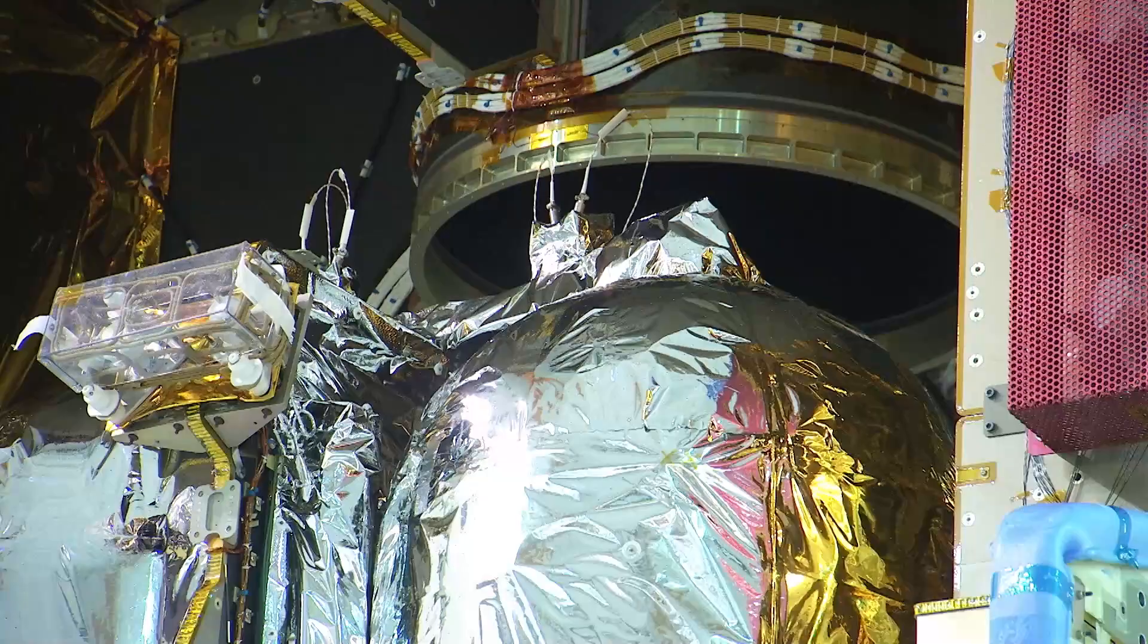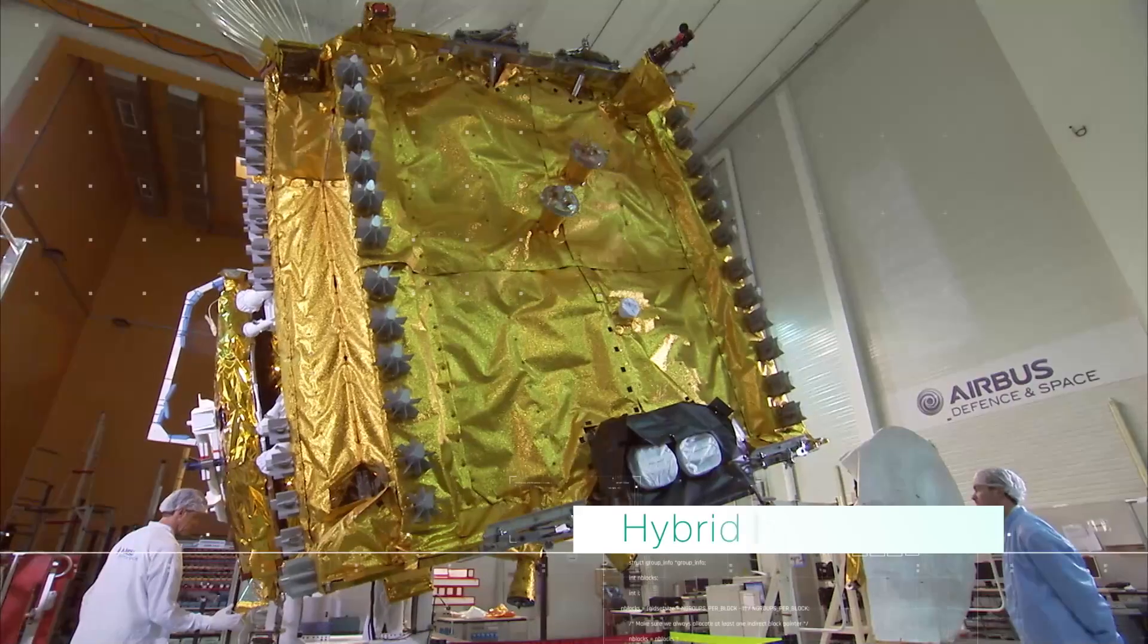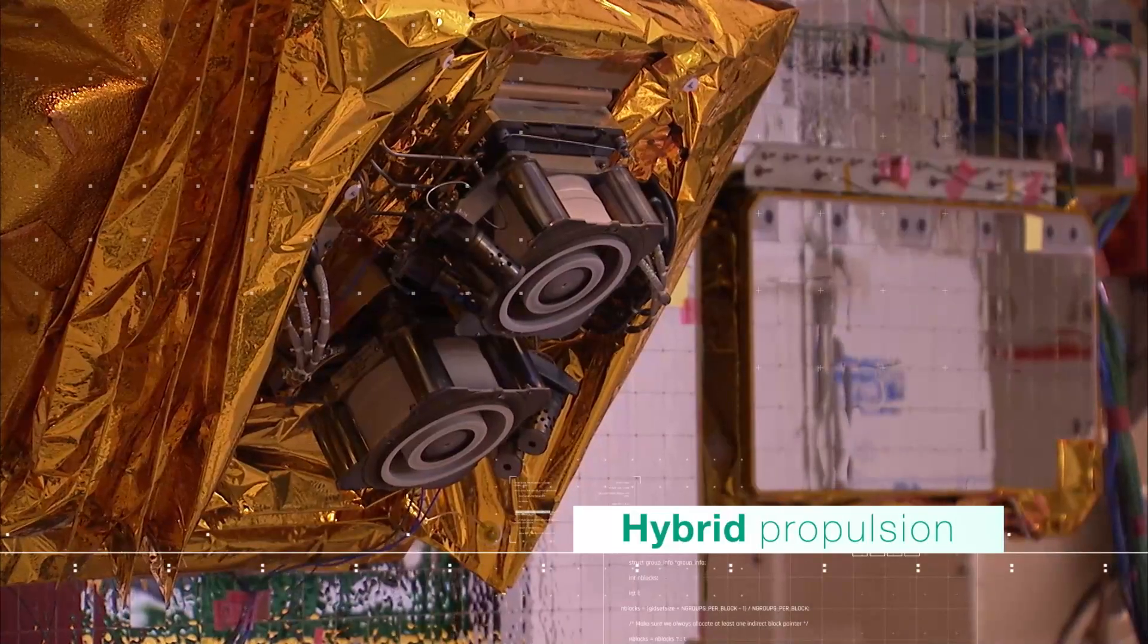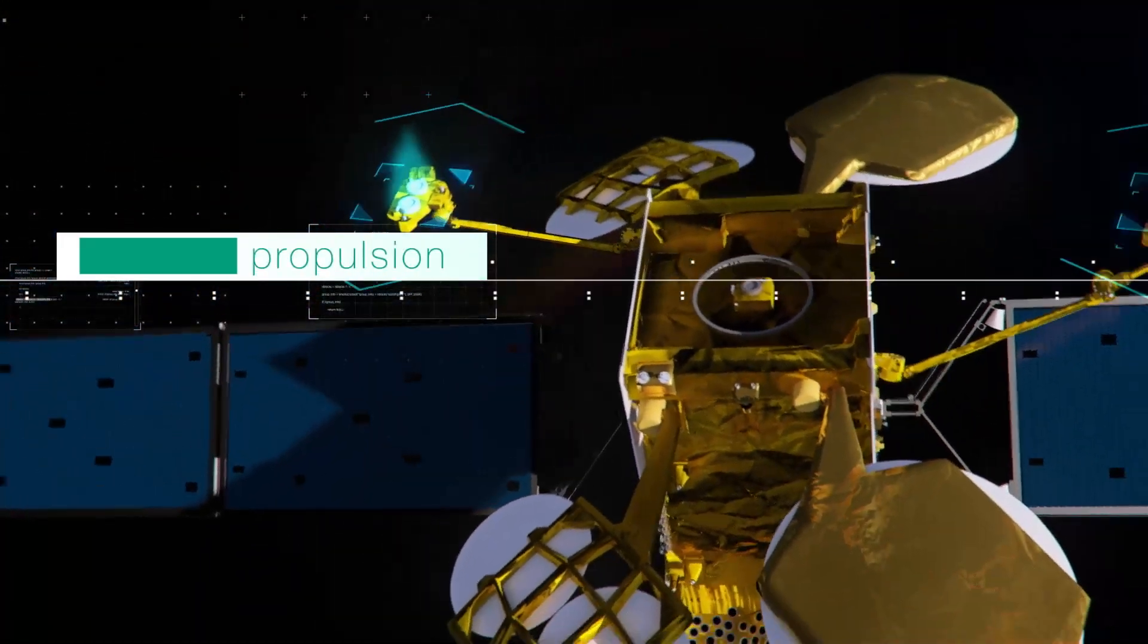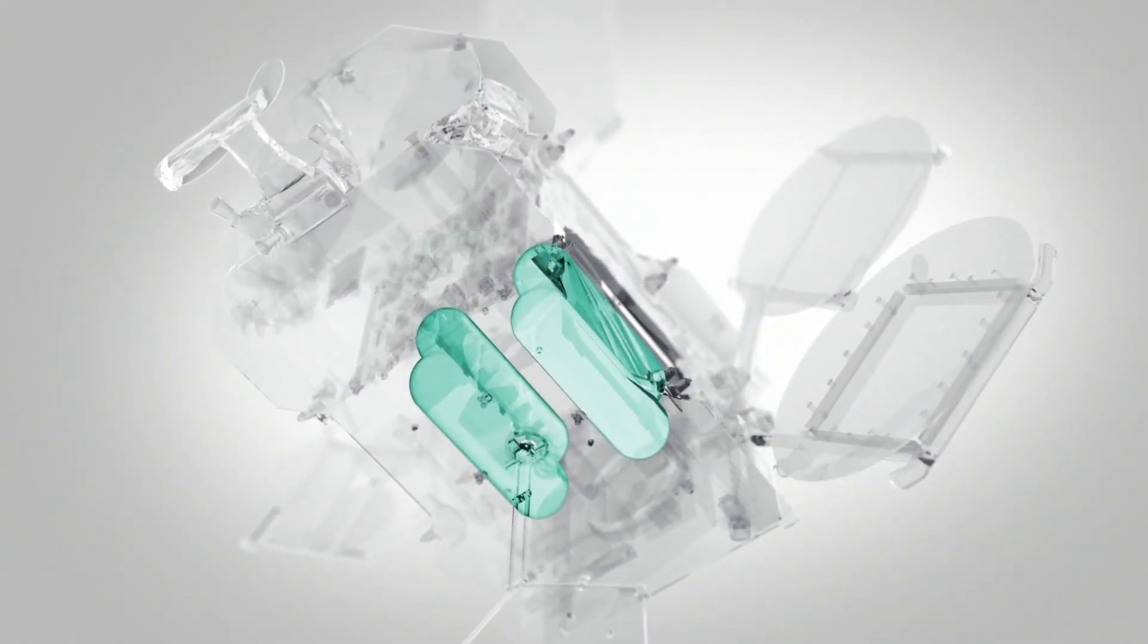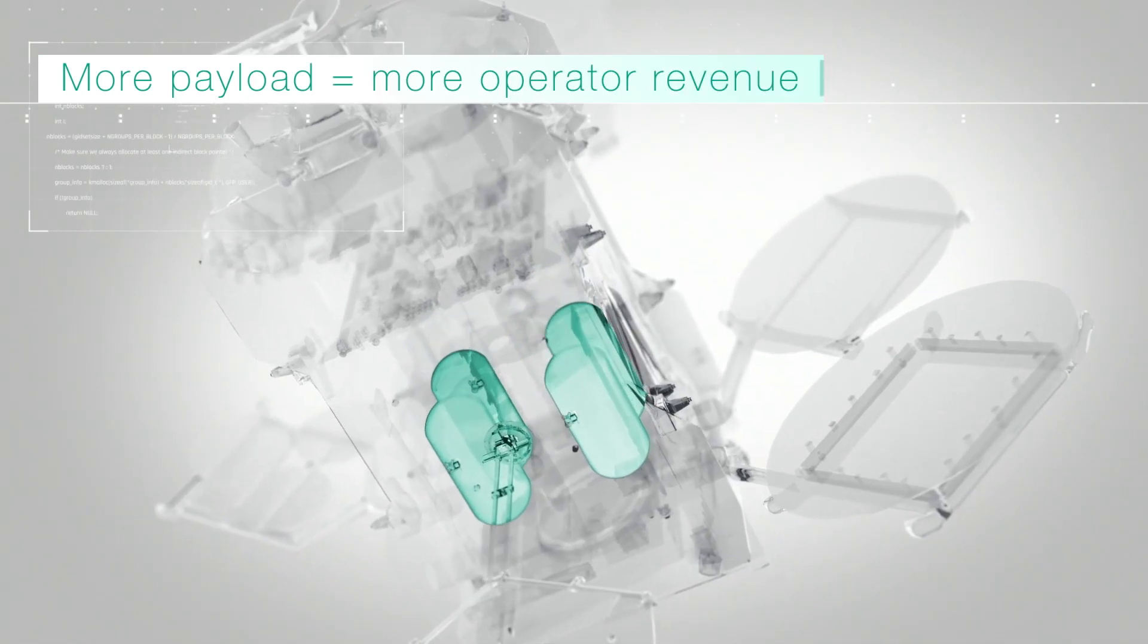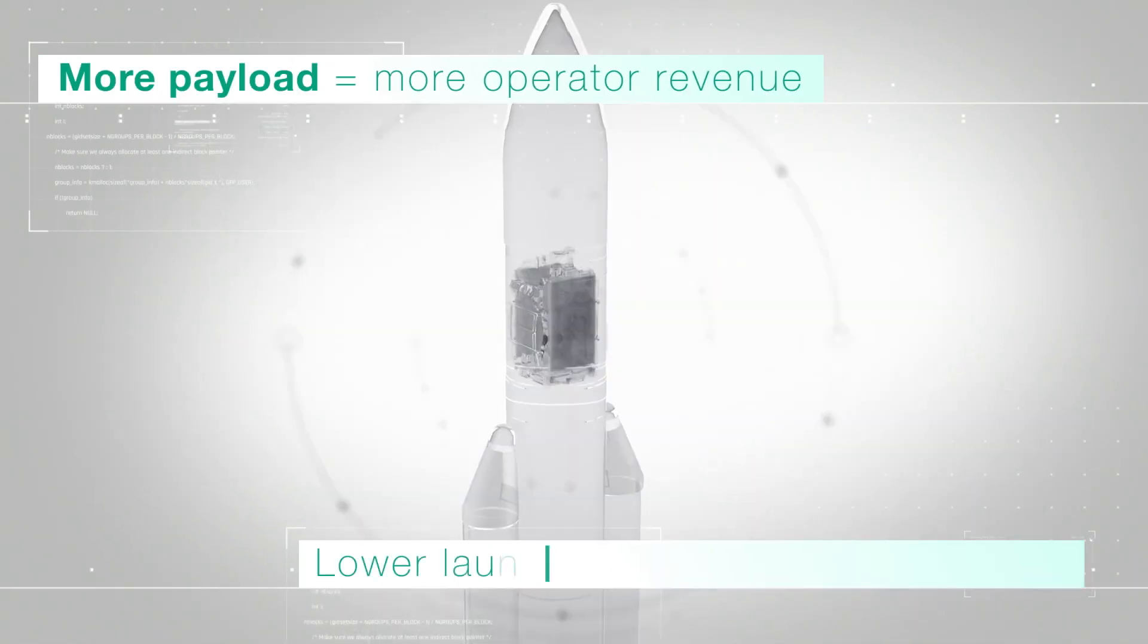New propulsion types were proposed, first with hybrid propulsion, combining electrical and chemical fuel for orbit raising and station keeping. Then with full electric propulsion, reducing propellant mass and allowing heavier and more powerful payloads, or the reduction of the satellite's launch mass.